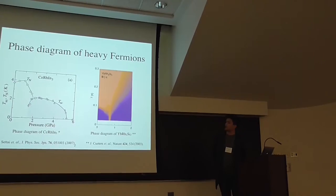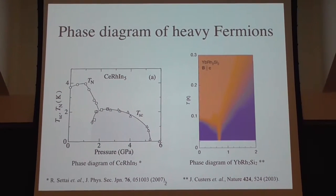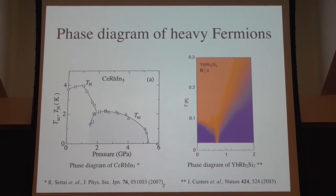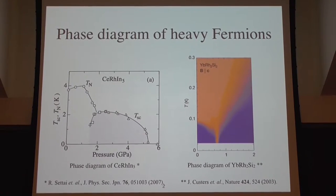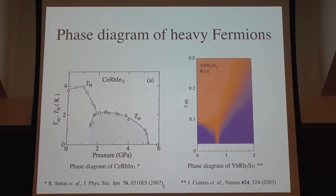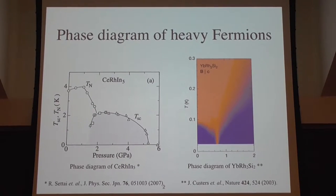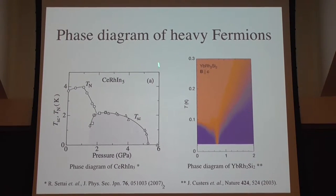We start from the neighborhood of the Kondo insulator, which is the heavy Fermi metal. For example, you can see here on the left-hand side the phase diagram of URu2Si2. If you apply external pressure to the sample, then you can suppress the antiferromagnetic ground state and induce some conventional superconductivity. On the right side, you can see the phase diagram of URu2Si2 compound. If you apply the external magnetic field, you can also suppress the antiferromagnetic ground state and induce a heavy Fermi liquid state, and in between a non-Fermi liquid state.